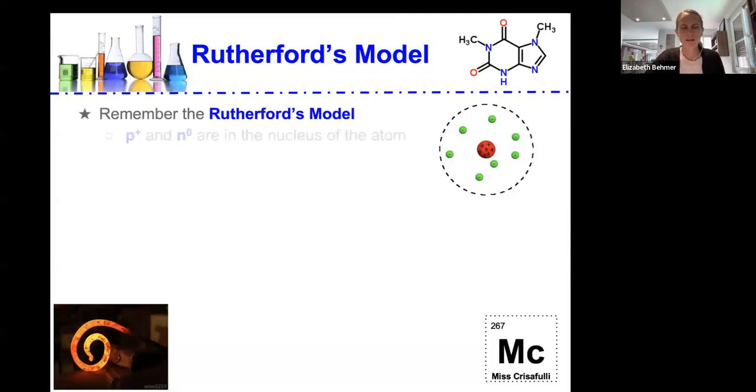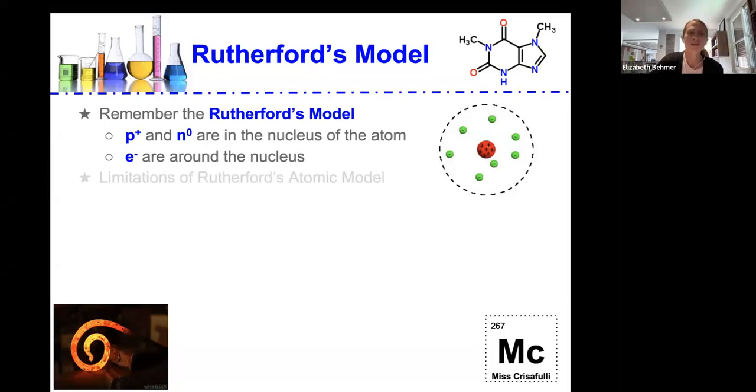So Rutherford's model, remember the Rutherford model where protons have a positive charge and neutrons have no charge, a neutral charge, and those are in the nucleus of the atom. Electrons have the negative charge, and those are around the nucleus.